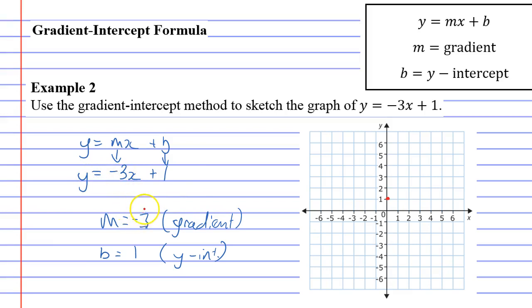Now this time the gradient is negative 3, it's not a positive number, and all that means is when you go across 1, instead of going up 3 you just go down 3.